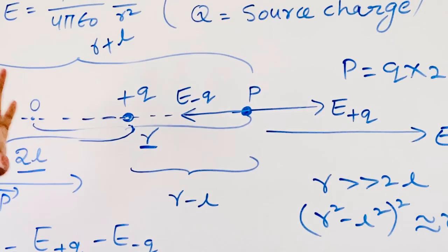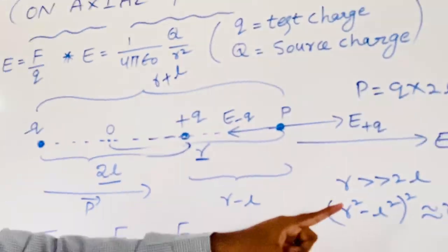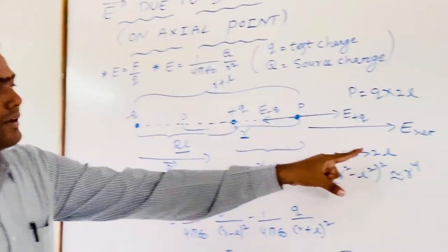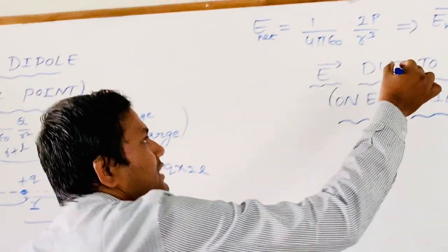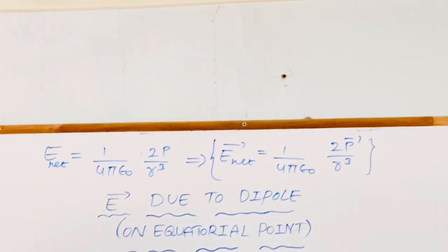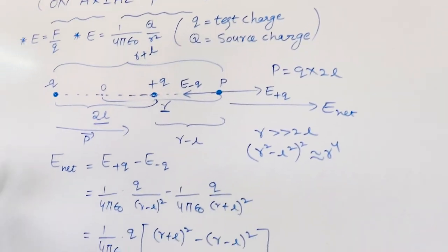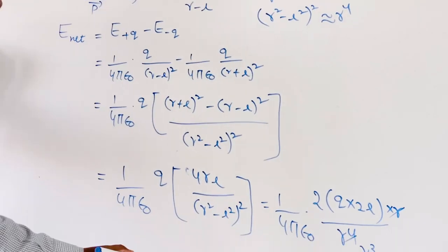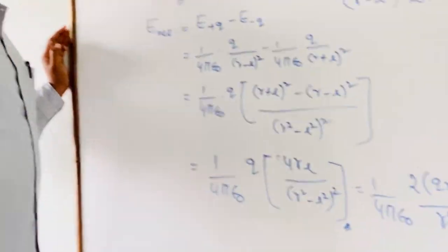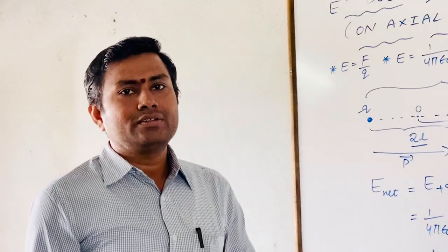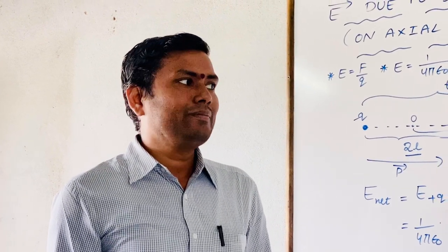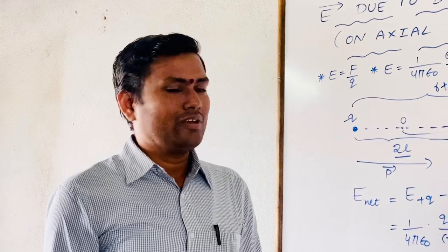Remember, this expression is valid only for short dipoles, that is when R is much greater than 2L. When the dipole is not short and has dimensions comparable to R, we must use the full expression. I hope this lecture was understood well. We will meet with one more new concept in the next session. Thank you for watching.